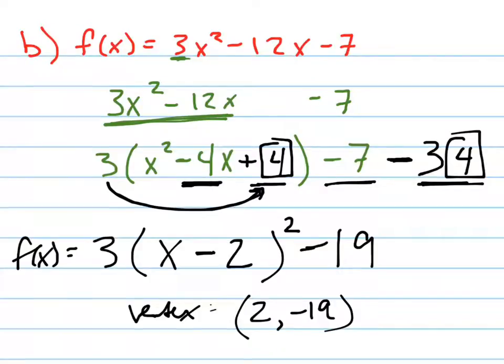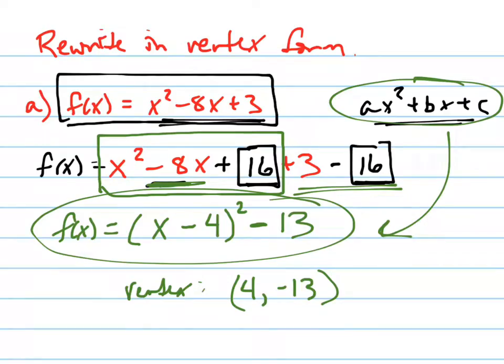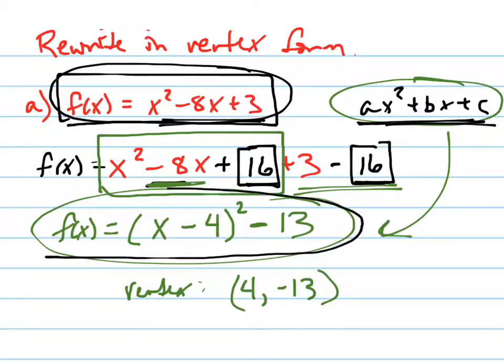So again, what is the whole point of completing the square? Let's go back and review this. The whole point of completing the square is it's taking an equation in standard form, like ax squared plus bx plus c, and putting it into vertex form. And why would you want to do that? Because what's easier to find if it's in vertex form? The vertex.